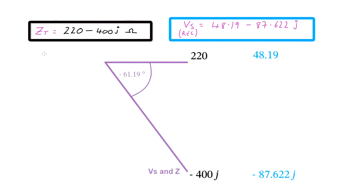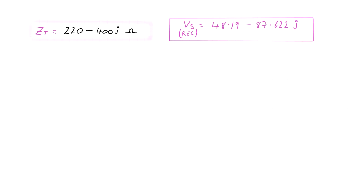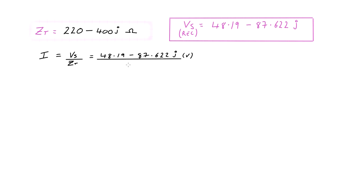This triangle shows it's the same triangle whether we use impedance or voltage. We need to find the current through Ohm's law: I = V/Z. Using complex numbers, that's (48.19 − 87.622j) volts divided by the impedance (220 − 400j) ohms.